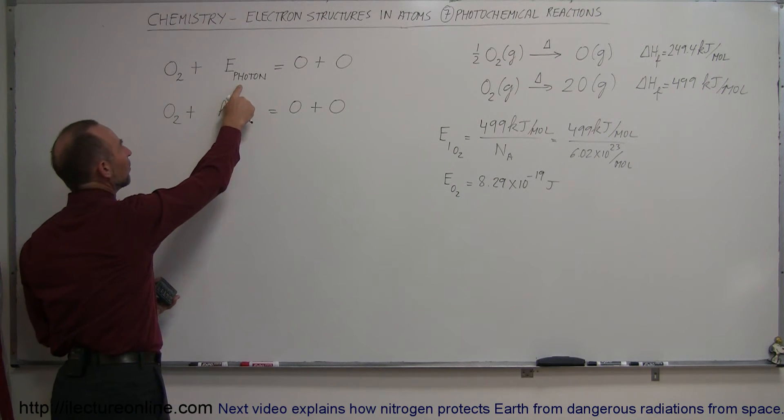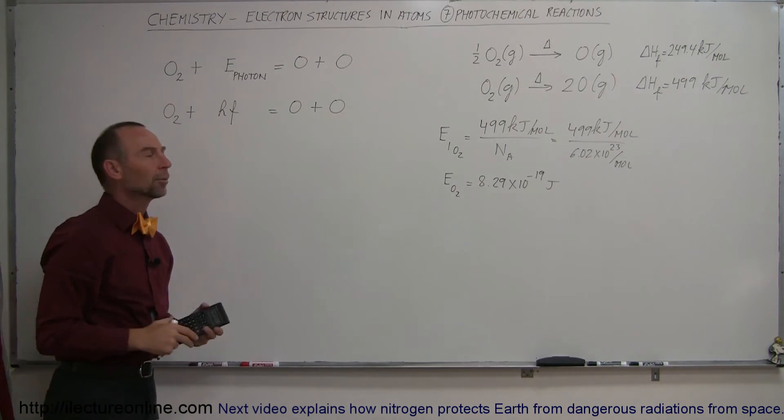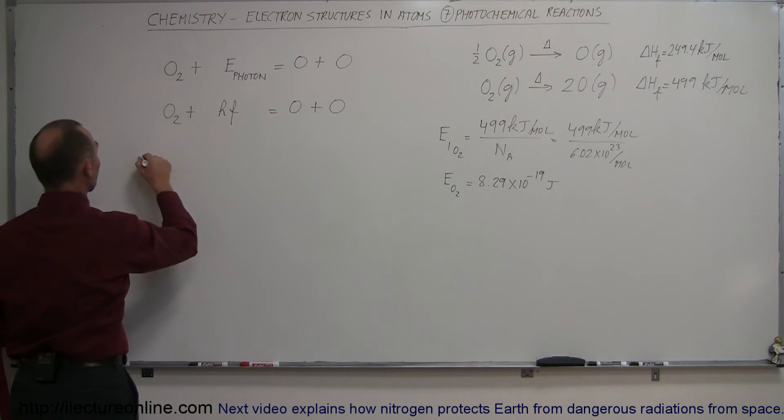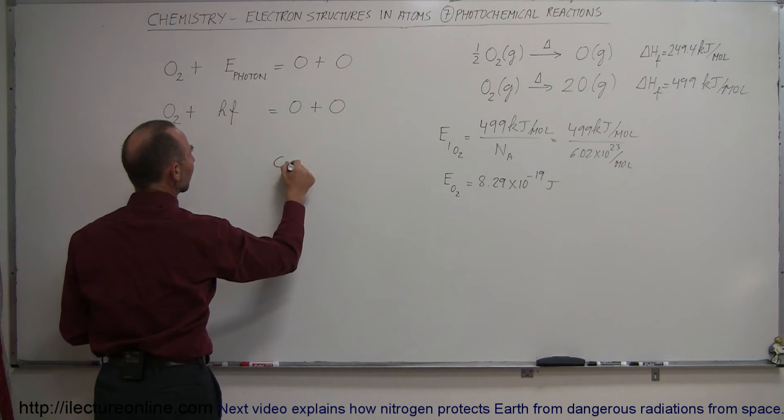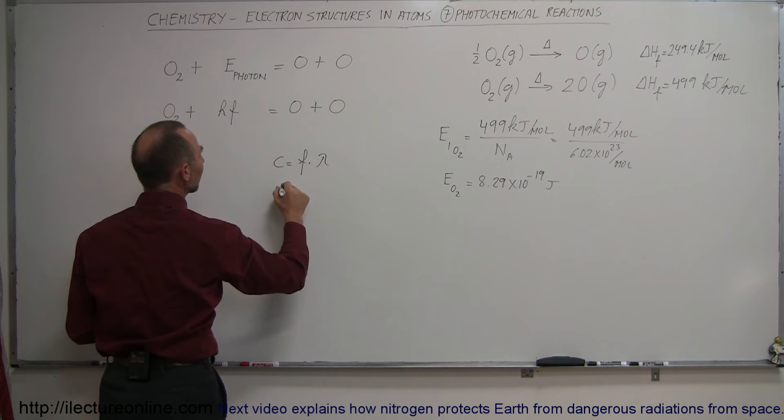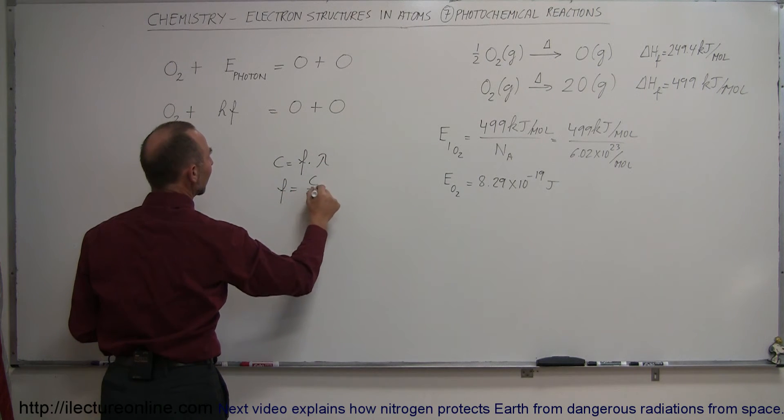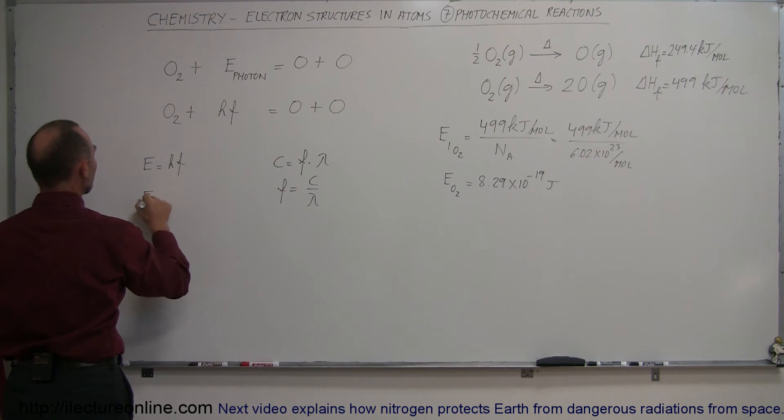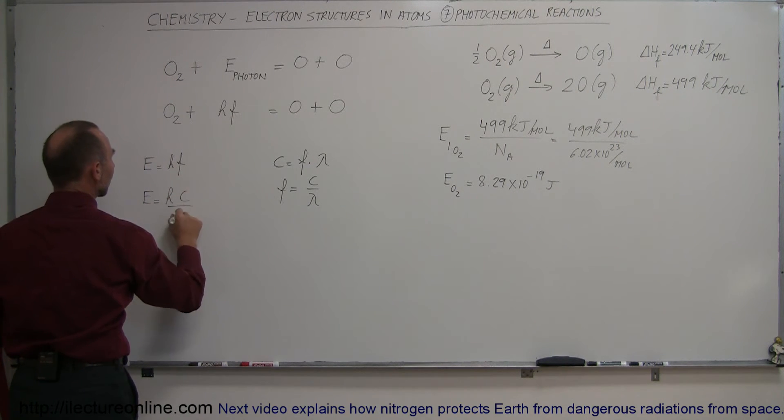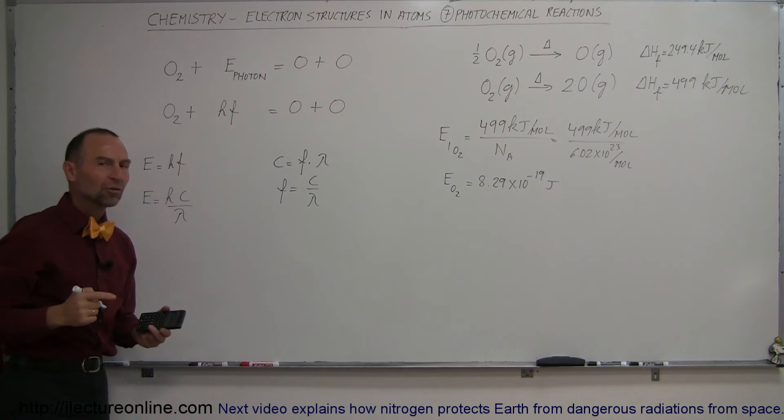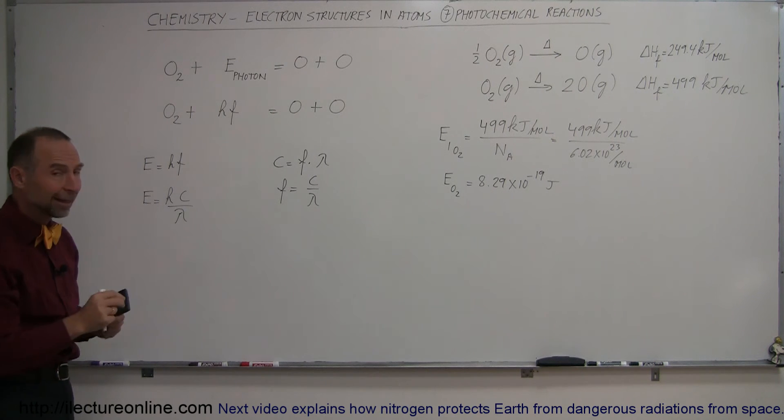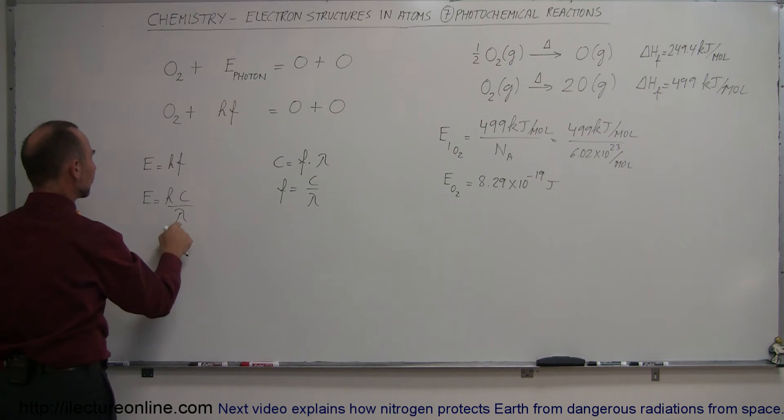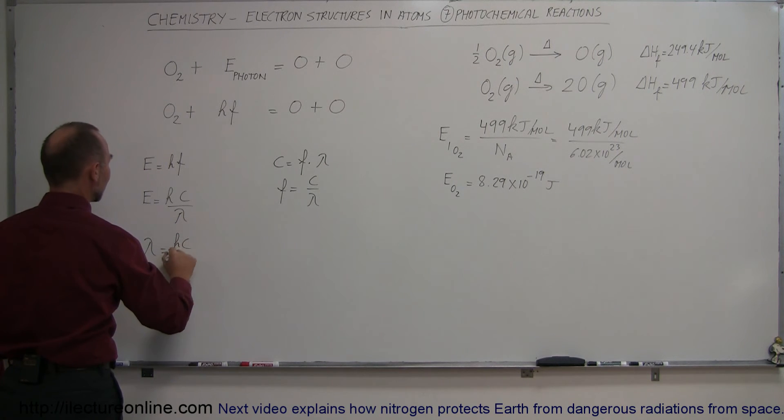So what kind of photon can bring in that kind of energy? Notice that the energy of a photon, Hf, is equal to Planck's constant times the frequency of that photon. Since we know that the speed of light for a photon is equal to the frequency times the wavelength, we can say that the frequency can be written as the speed of light divided by the wavelength. So the energy is equal to H times C over lambda. We made that transformation because it's a lot easier to think about photons in terms of their wavelength instead of their frequency. Solving for wavelength, we have wavelength equals Hc divided by the energy.